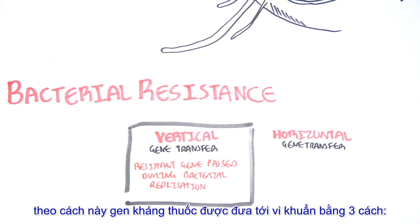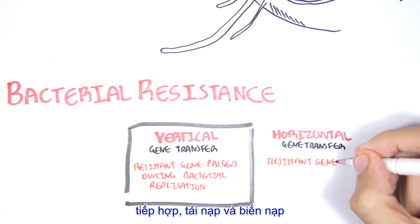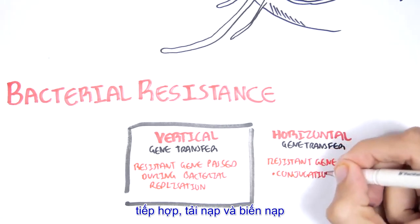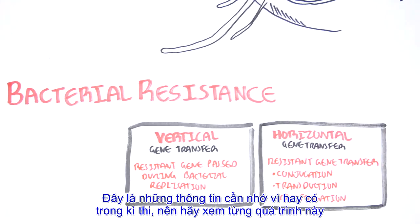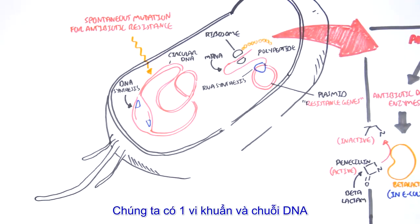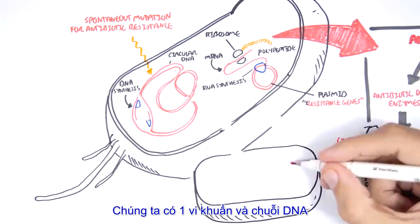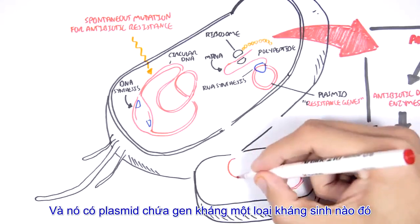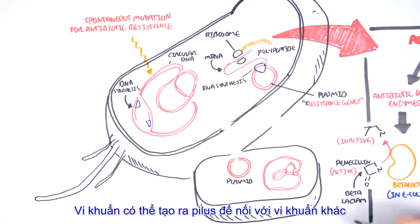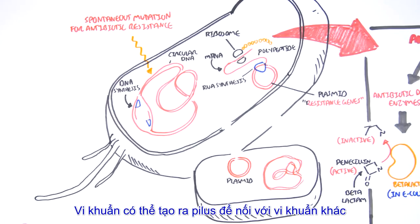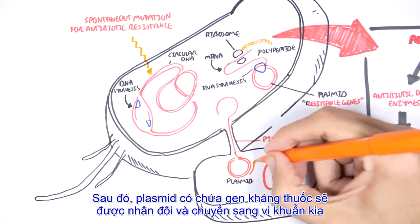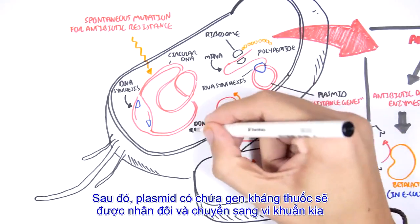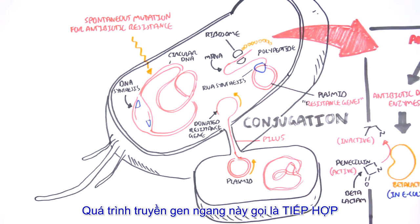The other way resistant genes are acquired is through horizontal gene transfer, where the resistant gene is transferred to a bacteria through three different means: conjugation, transduction, or transformation. In conjugation, a bacteria with a plasmid containing the resistant gene forms a pilus that attaches to another bacteria — kind of like sex — and then the plasmid containing the resistant gene is replicated and passed on to the other bacteria.